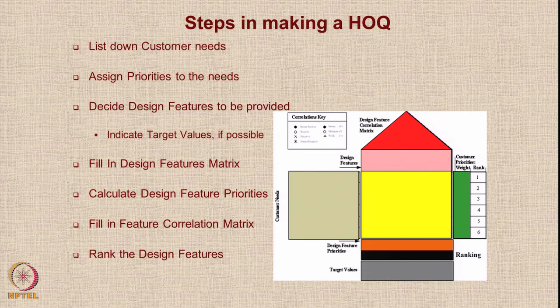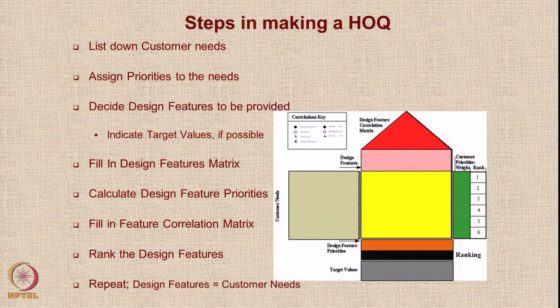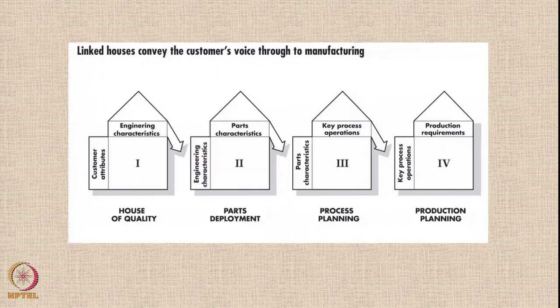Depending on the design feature priority calculated, you can rank the design features and drop off those with low rank, continuing with high-ranking features. Then you repeat the whole process — using high-ranking design features as the new customer needs, going one level down to address what features should be provided for those needs. You can continue working further until you reach the end of the design.